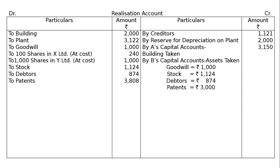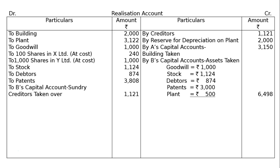Patents Rs. 3000 and Plant Rs. 500. Total amount for B's Capital Account — Assets Taken — is Rs. 6498. On the liability side, we write down to B's Capital Account, Assets Taken Over. B was also to pay the creditors, so to B's Capital Account, Assets Taken Over and Creditors Paid is Rs. 1121.